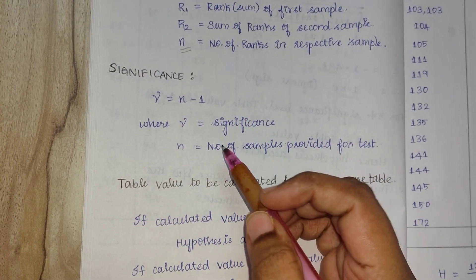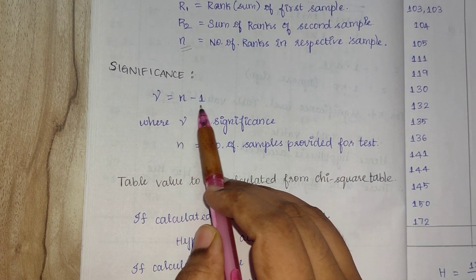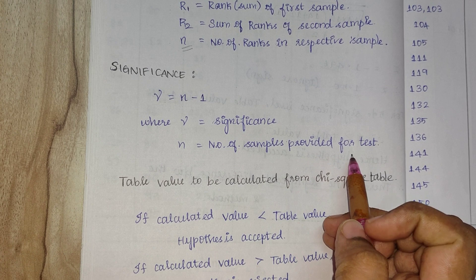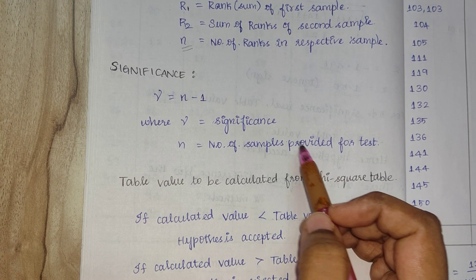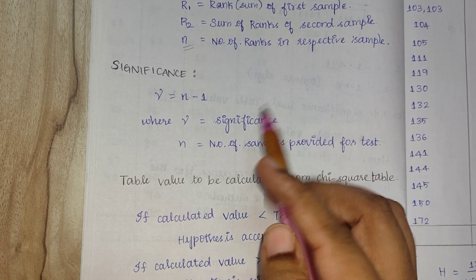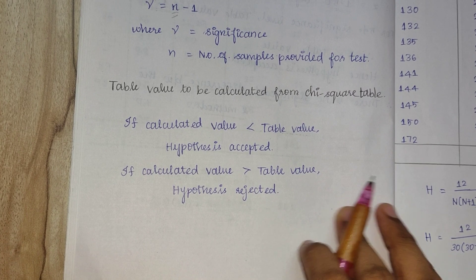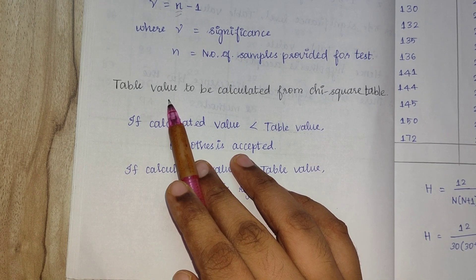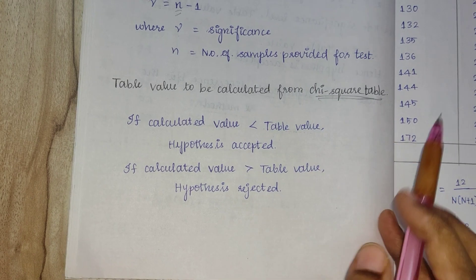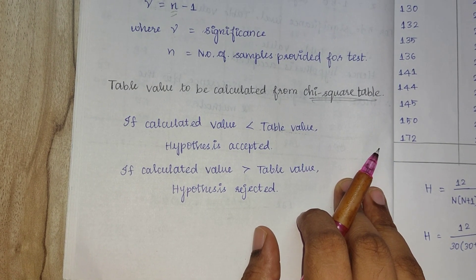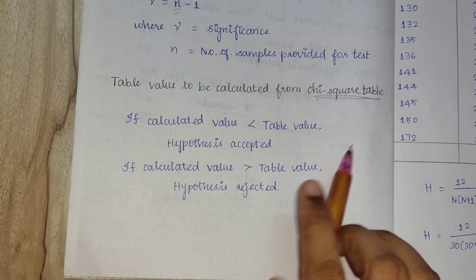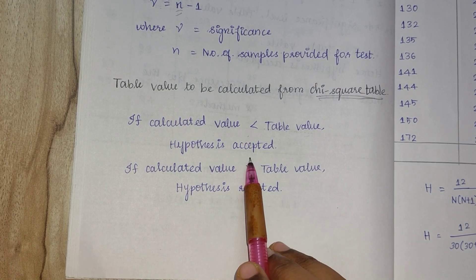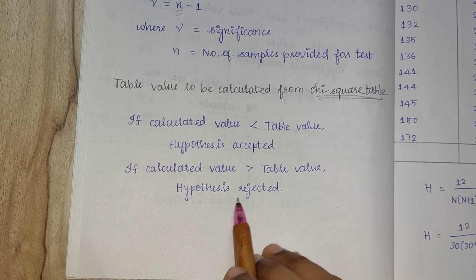To find significance, we calculate the degrees of freedom as N minus 1 where N is the number of samples provided. We compare the calculated H value against the chi-square table value. If the calculated value is less than the table value, the hypothesis is accepted. If the calculated value is greater than the table value, the hypothesis is rejected.